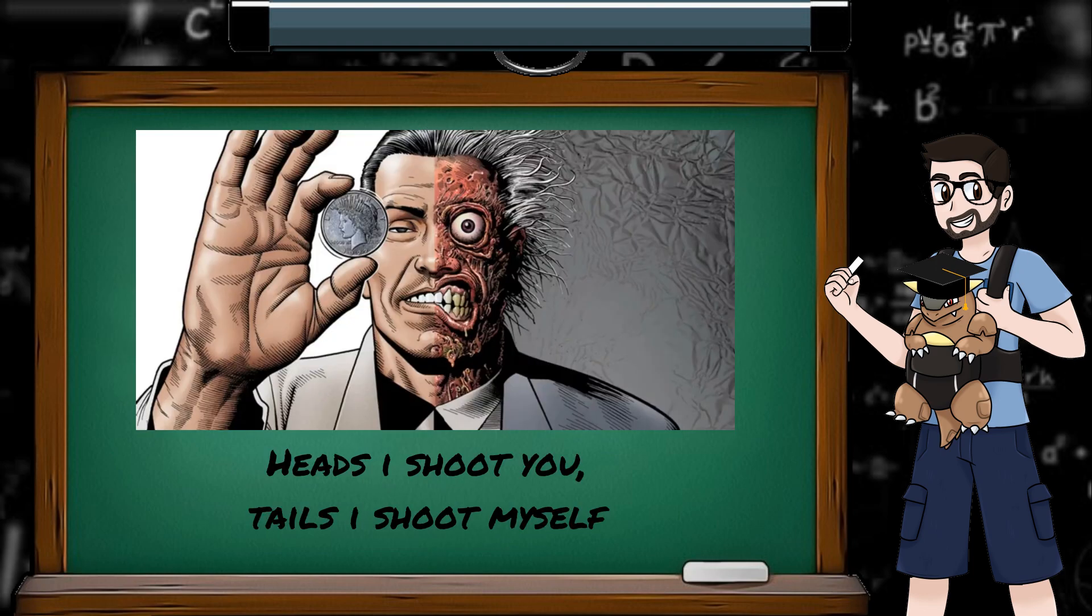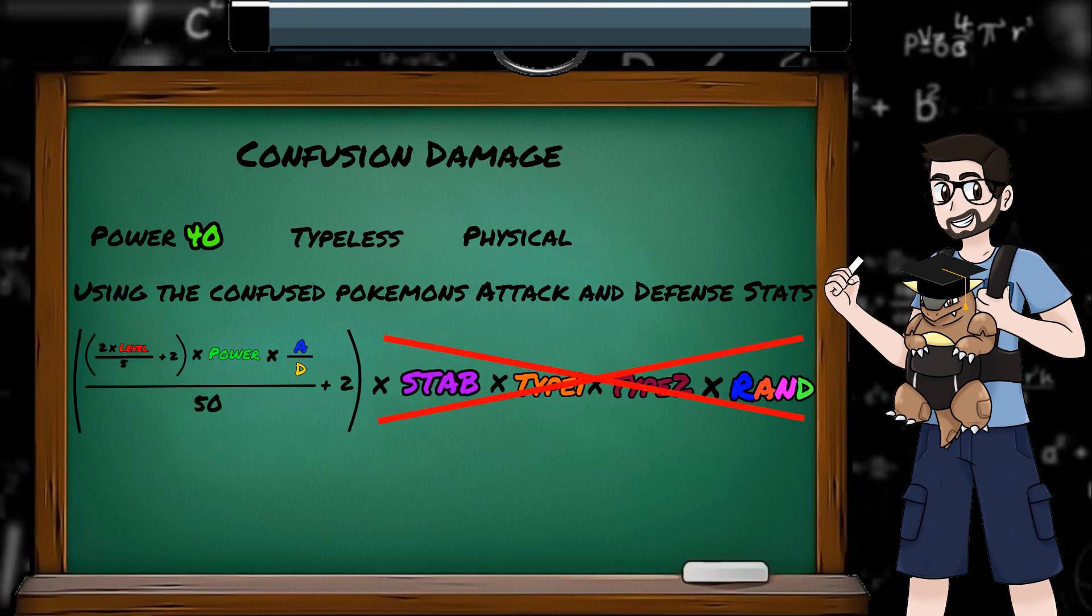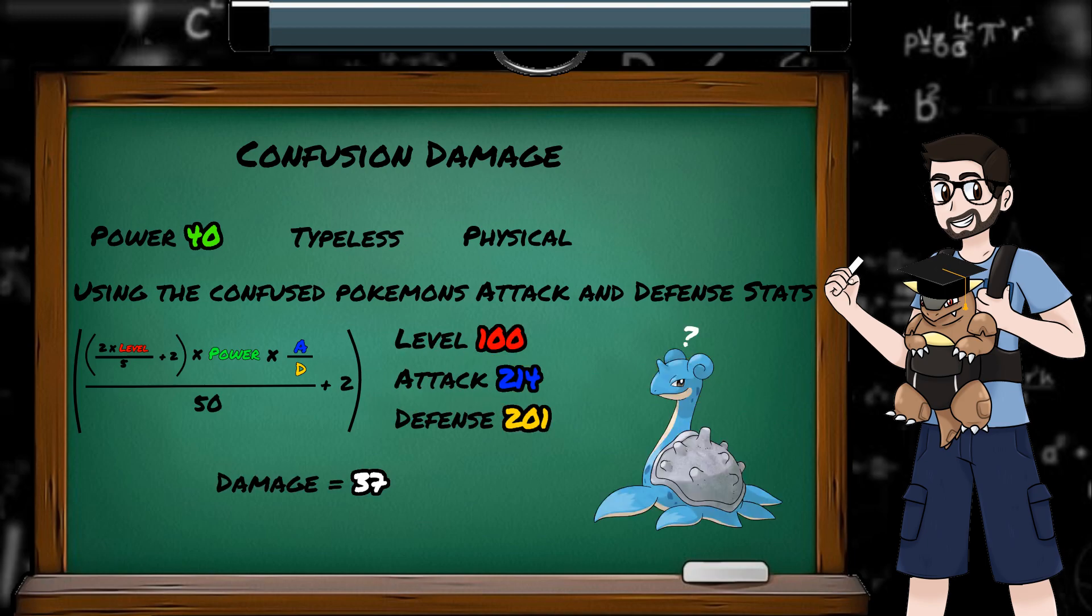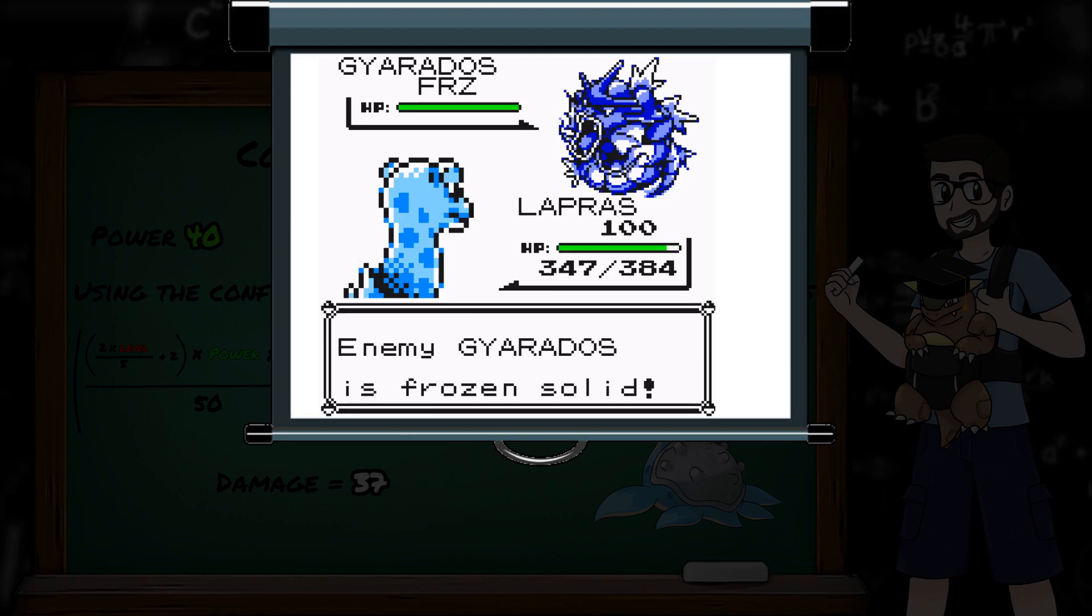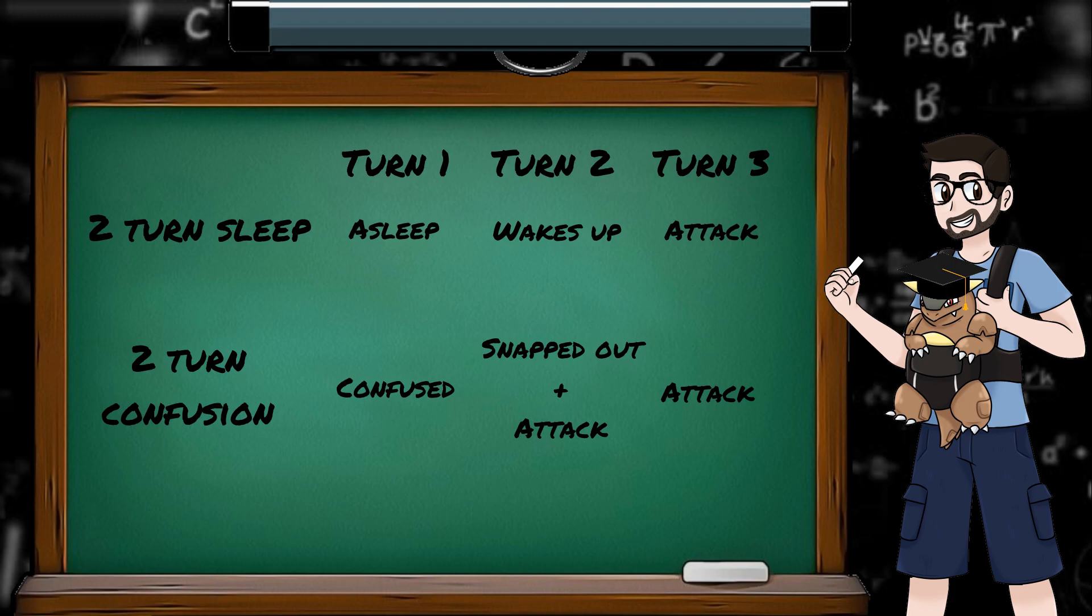Each turn a Pokemon is confused, they have a 50% chance to use their selected attack, and a 50% chance to smash themselves in the face. The damage that is done to yourself is a base 40 power, typeless physical attack, and uses the confused Pokemon's attack and defense stats. So this is a big concern for glass cannons, or getting confused after you've boosted your own attack with sword stance. For self-inflicted confusion damage, we only use the first part of the damage equation, as it's typeless so we don't have stab or type effectiveness, and also the random element is removed. So using an example of this level 100 Lapras, we should be doing 37 damage every time we hurt ourselves in confusion. And as we can see, that's indeed the case. Confusion damage can't critically hit, and also it can't miss. Another difference between sleep and confusion, is that a Pokemon doesn't miss a turn when snapping out of confusion, allowing them to attack on the same turn they regain sanity.